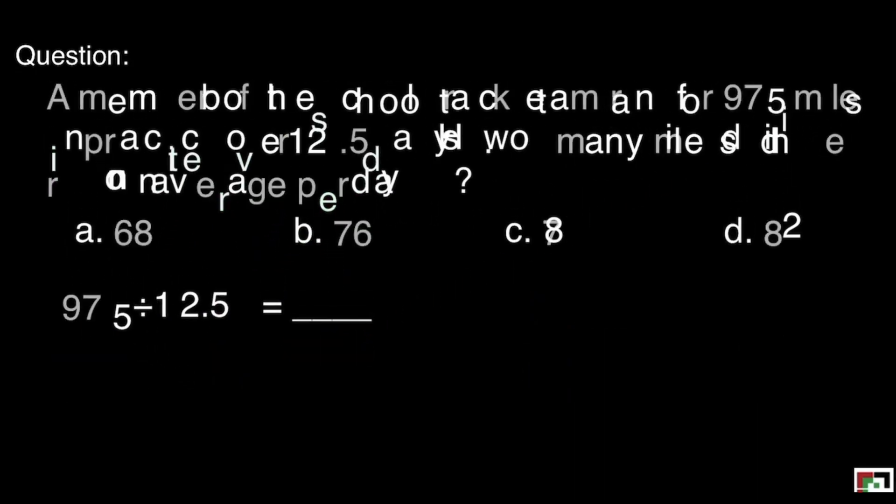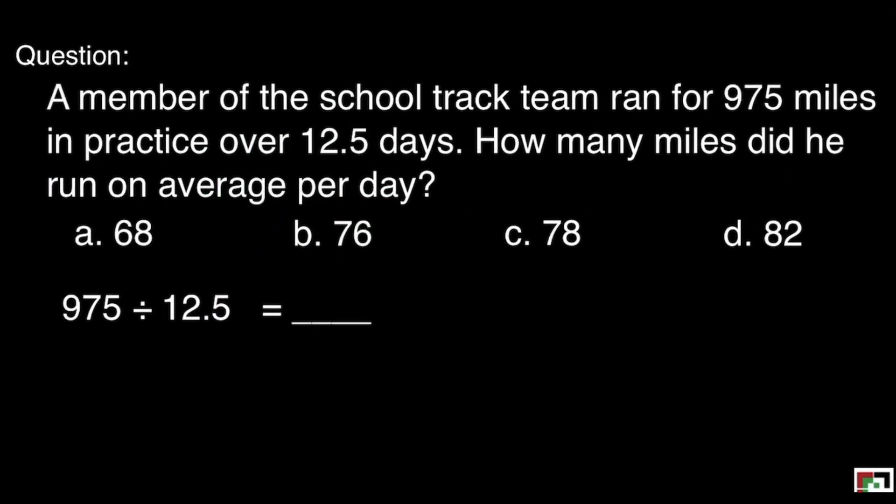Next one. A member of the school track team ran for 975 miles in practice over 12.5 days. How many miles did he run on average per day? This is our dividend, divisor, and the quotient.